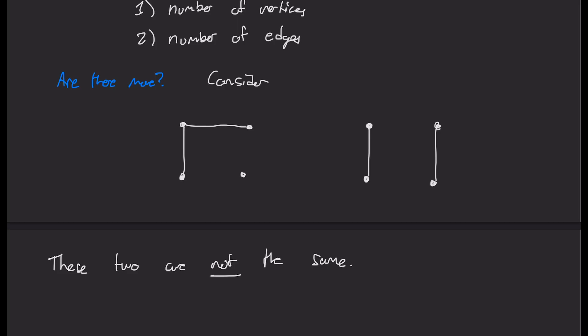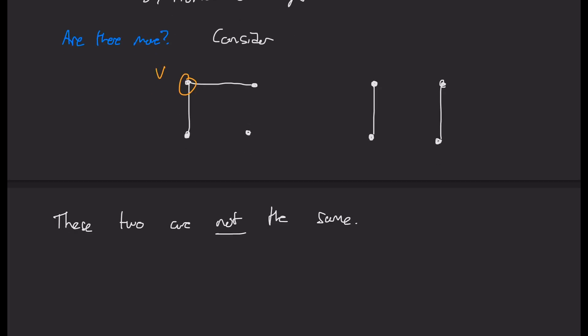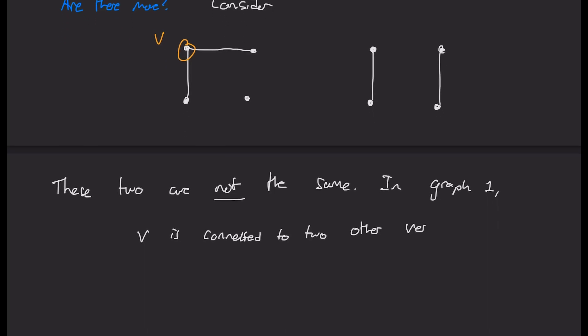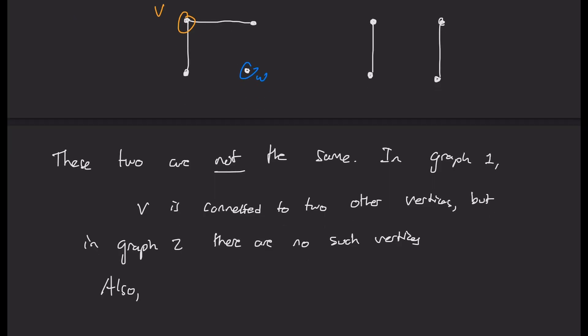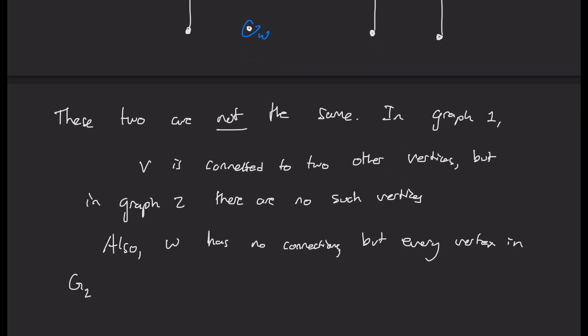So one observation you can make is that in graph one, this vertex V in the top left is connected to two other vertices through edges. But in graph two, there are no such vertices. Or another observation you could have made was that in graph one, this W in the bottom right has no connections. But in the right graph, there is no such vertex.